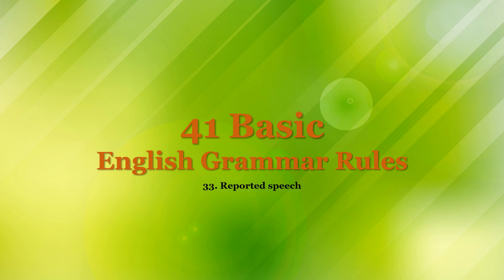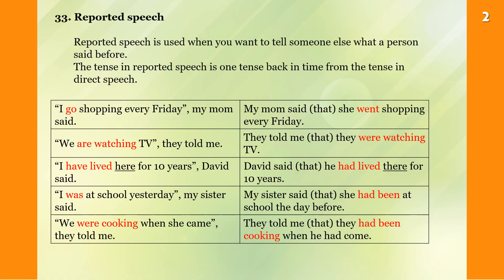Hello friends, this is teacher JB. We are studying 41 basic English grammar rules and today we are going to study reported speech. Reported speech is used when you want to tell someone else what a person said before. The tense in reported speech is one tense back in time from the tense in direct speech.